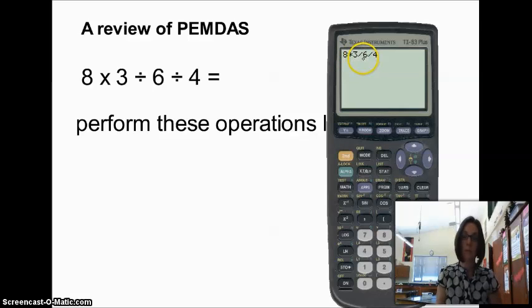divided by 6, which is 4, divided by 4, and then we're going to get a value of 1. So each thing is performed left to right.